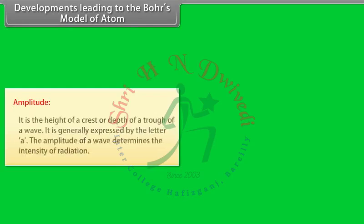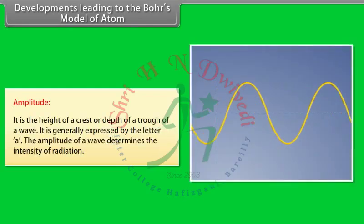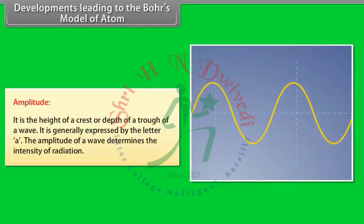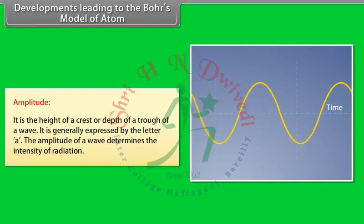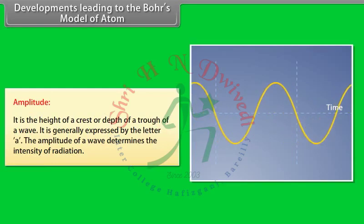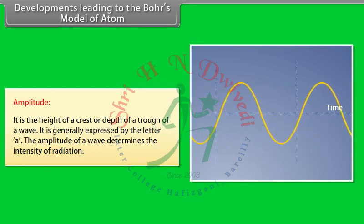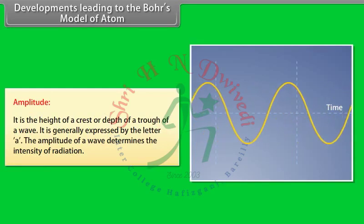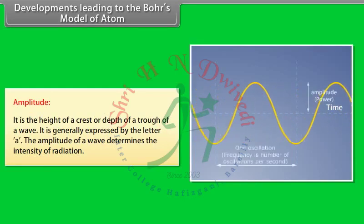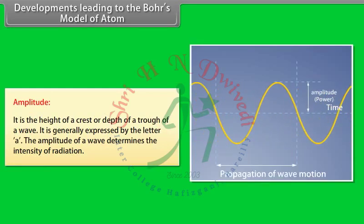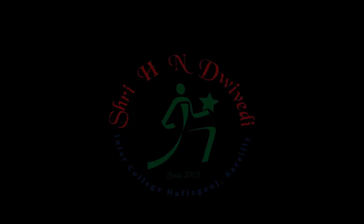Amplitude: It is the height of a crest or depth of a trough of a wave, generally expressed by the letter A. The amplitude of a wave determines the intensity of radiation.